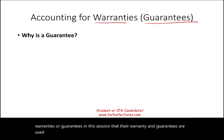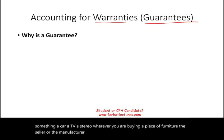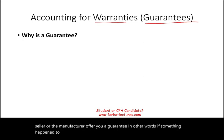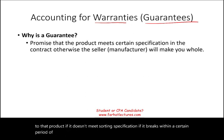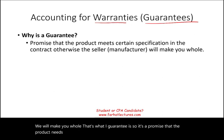So what is a guarantee? When you purchase something — a car, a TV, a stereo, a piece of furniture — the seller or manufacturer offers you a guarantee. In other words, if something happens to that product, if it doesn't meet certain specifications, if it breaks within a certain period of time, they will make you whole. It's a promise that the product meets certain specifications in the contract.